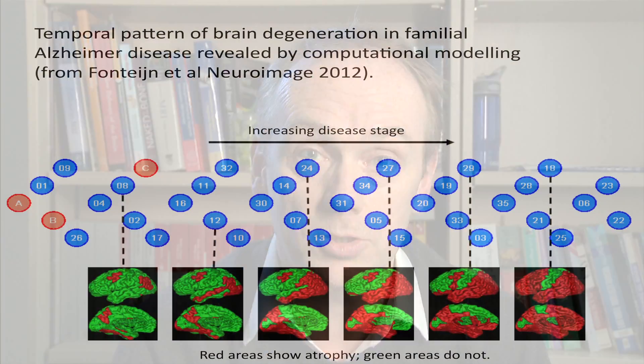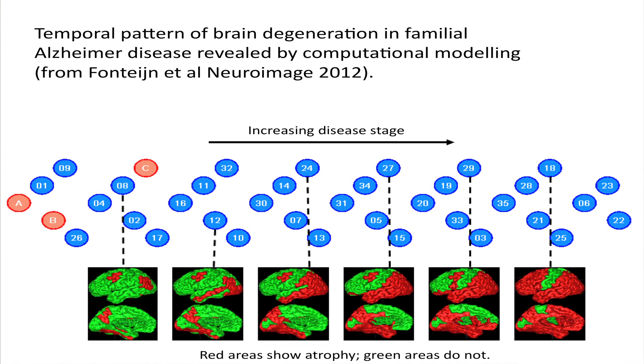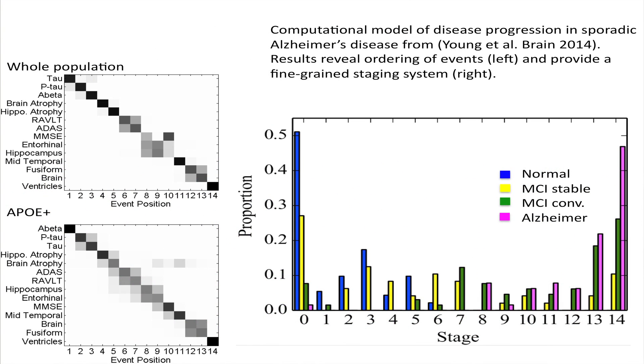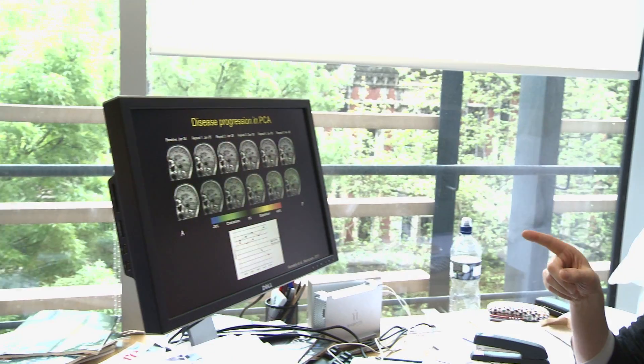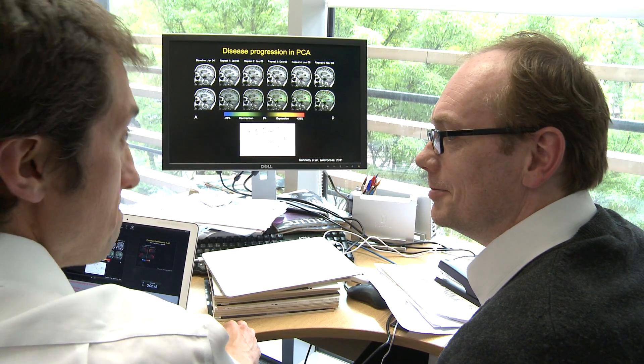I'm Danny Alexander, Professor of Imaging Science in the Centre for Medical Image Computing and Department of Computer Science here at UCL. This project is about using state-of-the-art computational modelling and machine learning techniques to enhance our understanding of dementias and neurological diseases, in particular Alzheimer's disease. This project aims to exploit those ideas to improve the diagnosis, the care and ultimately the treatment in one of the biggest healthcare challenges facing 21st century society.